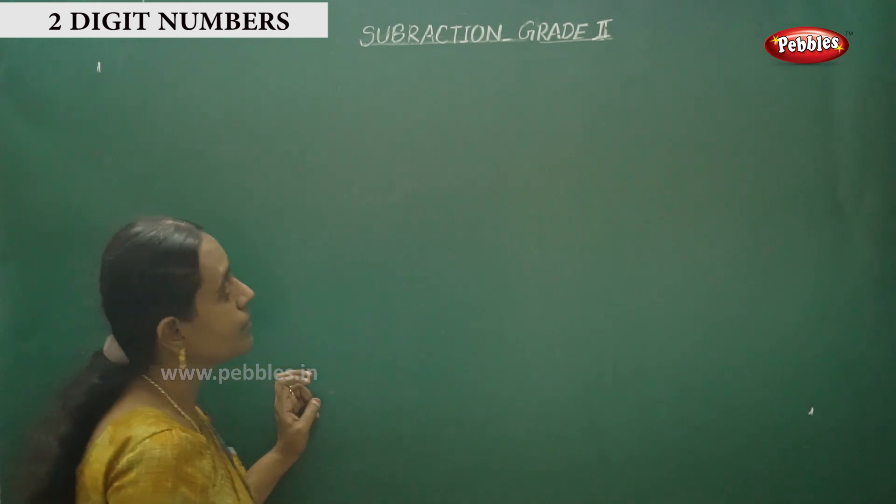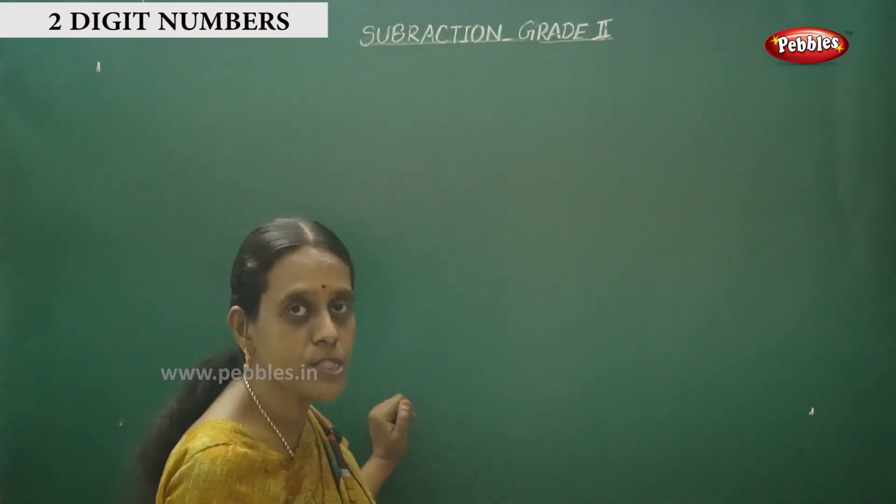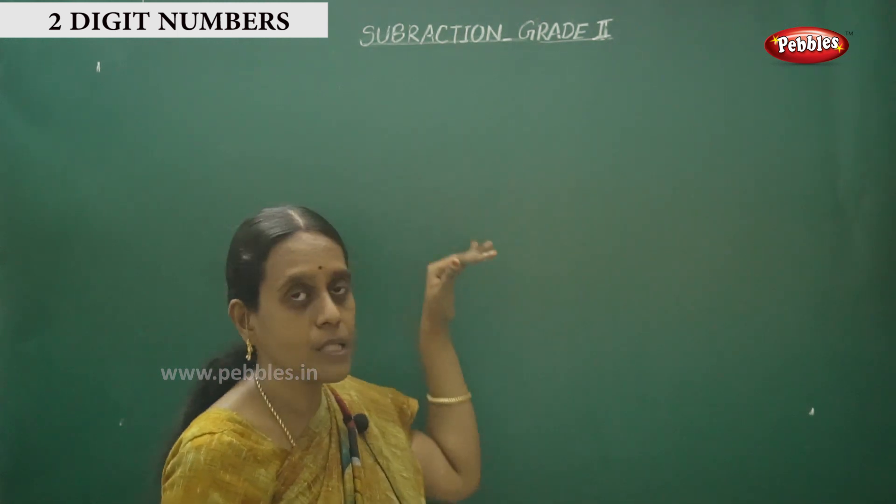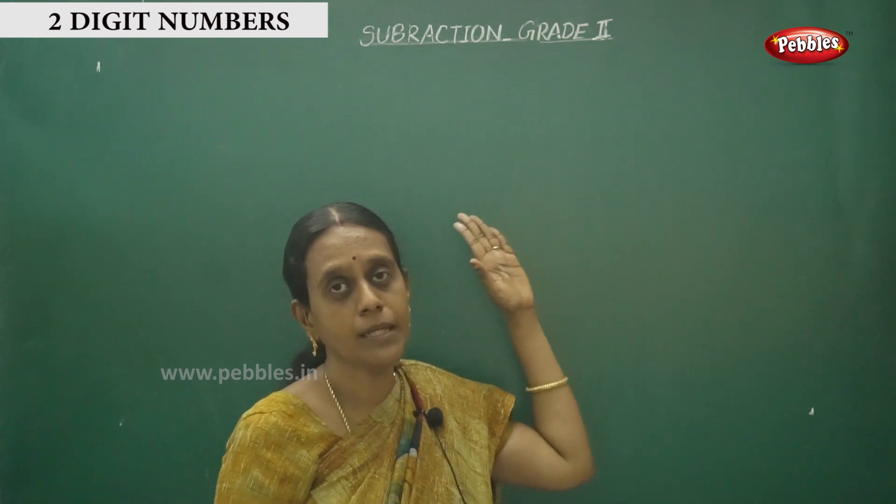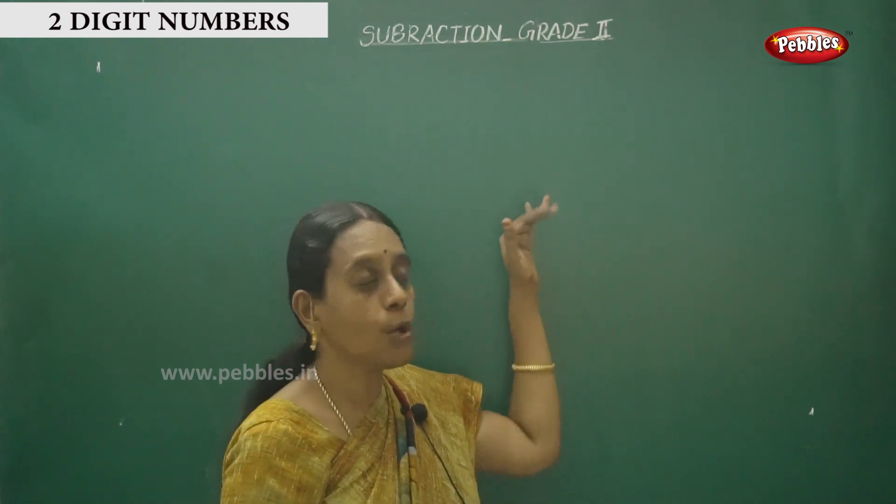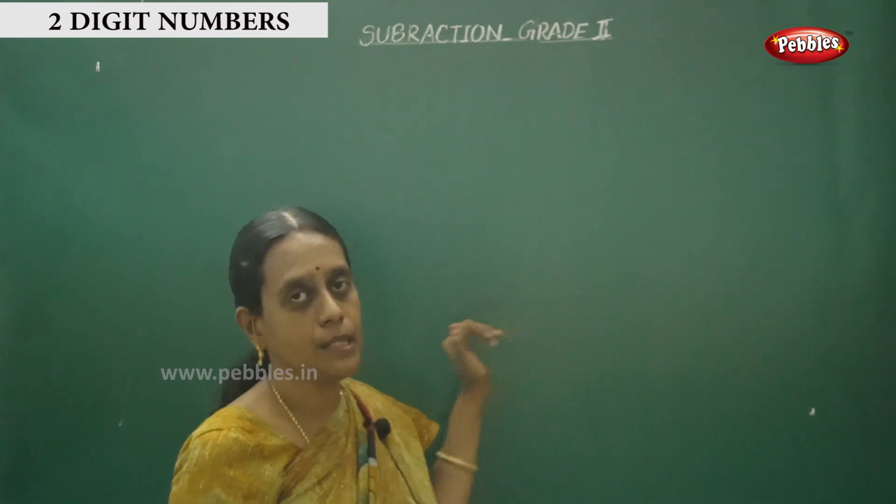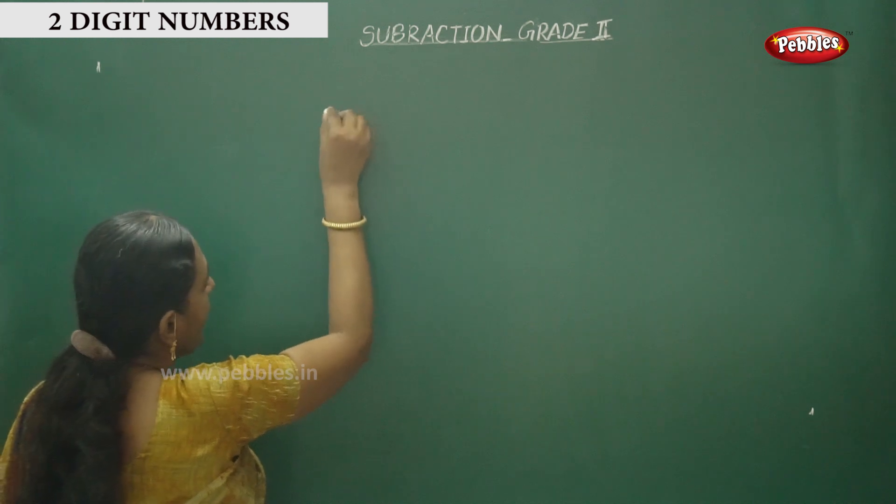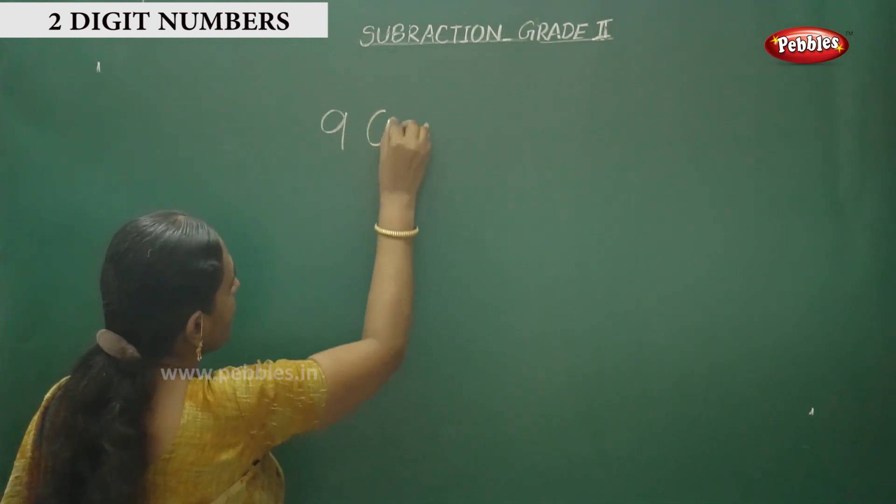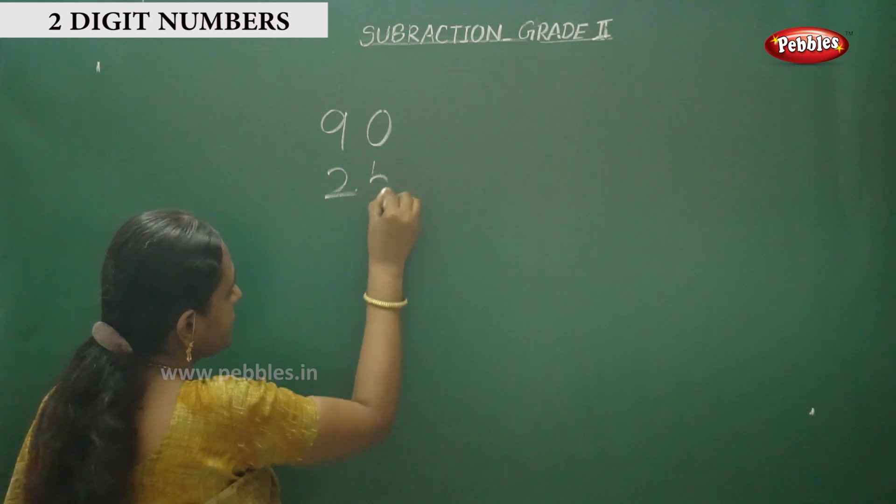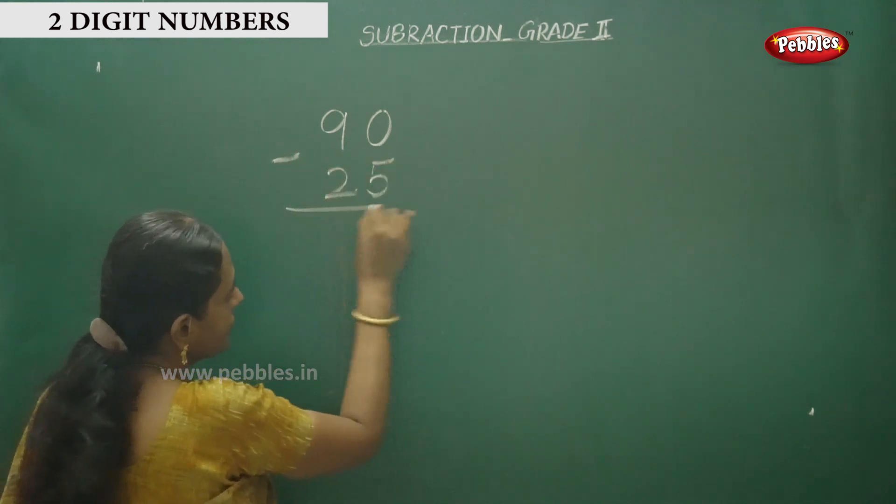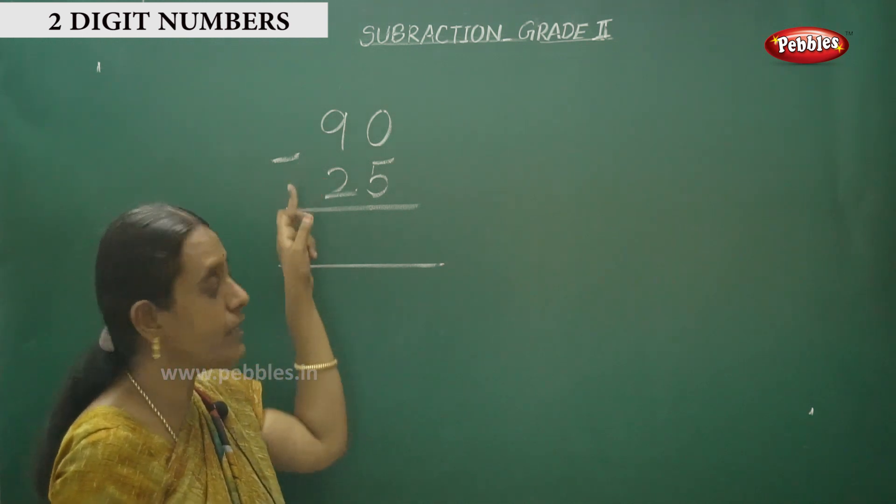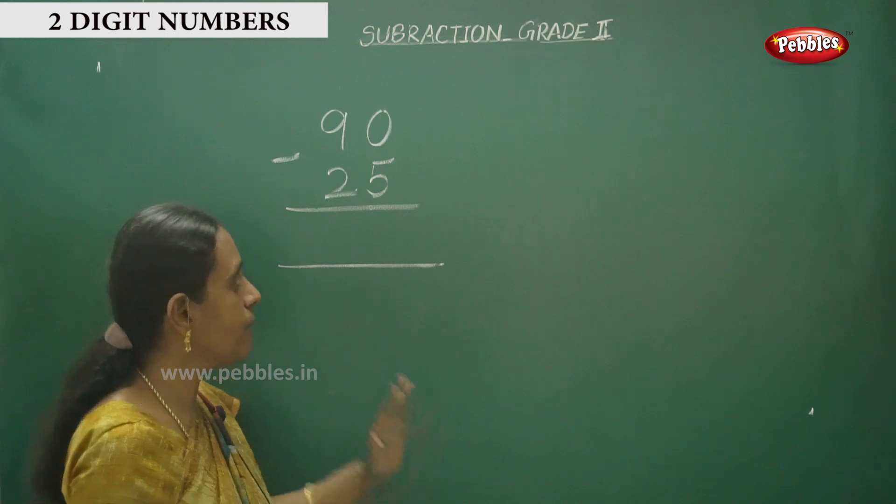Subtraction of two-digit numbers - sometimes we can't subtract directly, so you have to borrow one number from the neighboring number. This borrowing method we have to see now. Here, listen children - this is 90. What's the number? This is 90 minus 25. First borrowing.